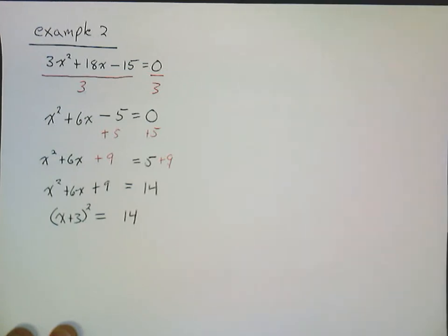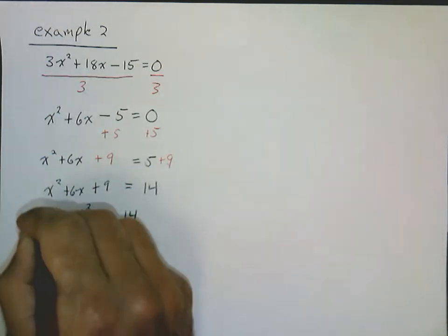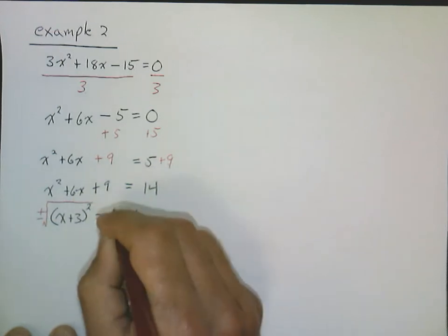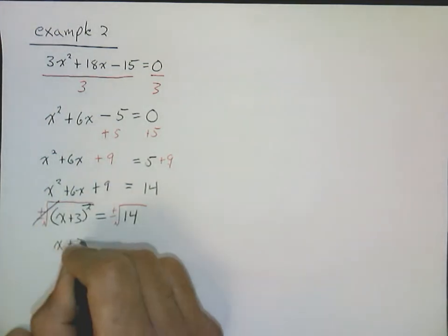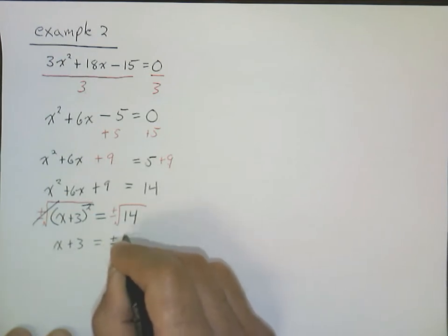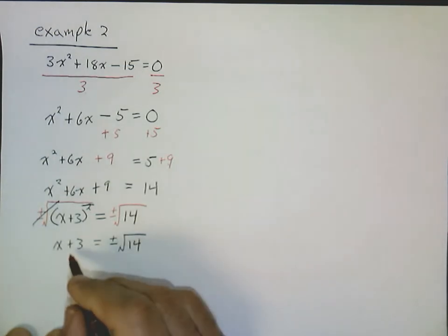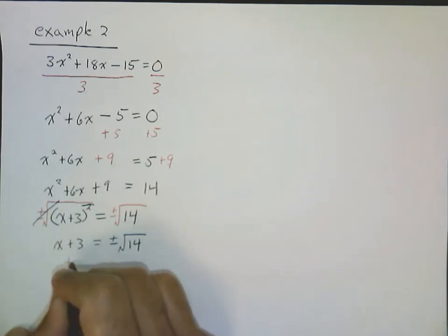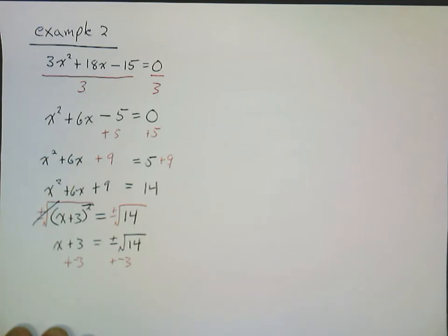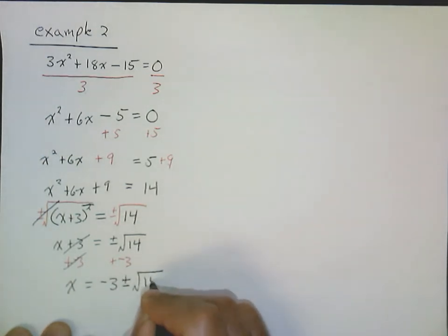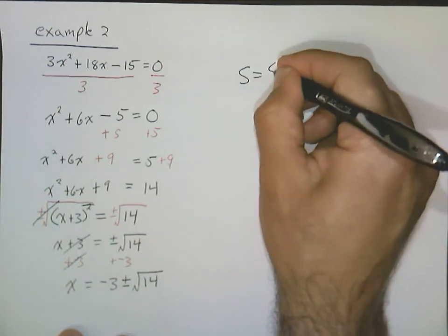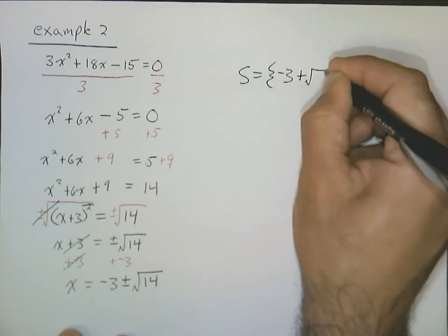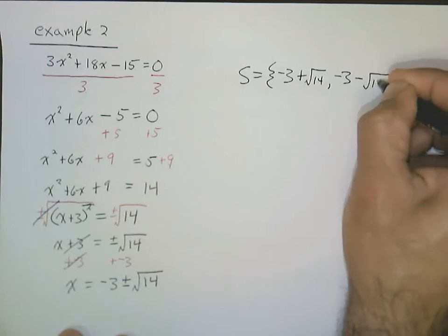Now we undo what's being done to x in reverse order of operations. We undo the squaring by taking the positive and negative square root of both sides. That leaves x plus 3 equals plus or minus the square root of 14. Then we undo the adding 3 by subtracting 3, leaving x equals negative 3 plus or minus the square root of 14. Our solution set contains negative 3 plus the square root of 14 and negative 3 minus the square root of 14.